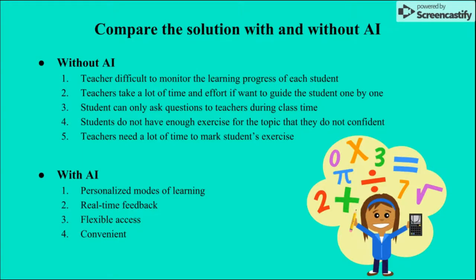With AI, software like Math IA uses cognitive science and AI technology to provide personalized tutoring and real-time feedback for students, so teachers do not need to guide students one by one. Students can now learn anywhere and anytime because Math IA is flexible — as long as the student has internet access, they can use the software anywhere. It provides a more personalized and convenient mode of learning on an ongoing basis.